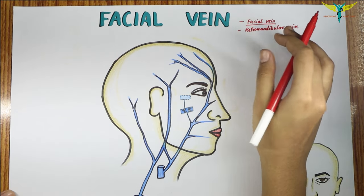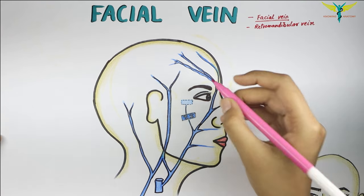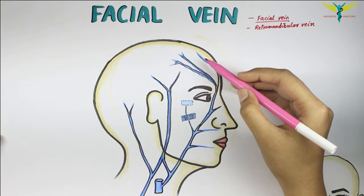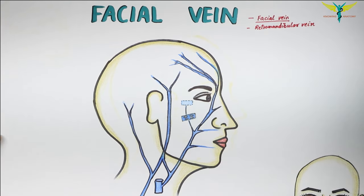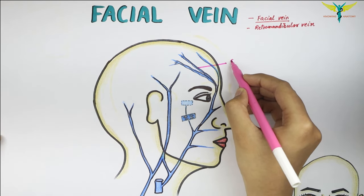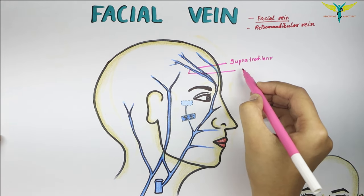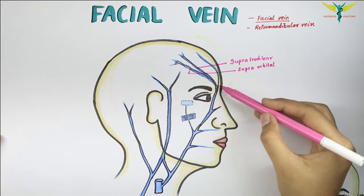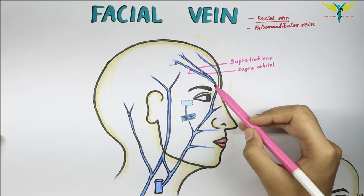The facial vein is the largest vein of the face. It is formed at the medial angle of the eye by the union of two veins: the supratrochlear and the supraorbital veins.